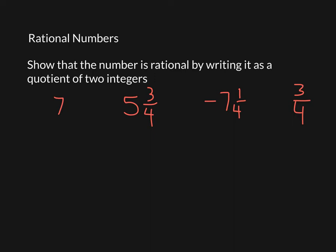A rational number is a number that can be written as the quotient of two integers. Frequently it's written as a fraction, or it could just be written as a division problem. But let's look at these here. So if I want to show that these are rational numbers, I'm going to write them as a division problem.